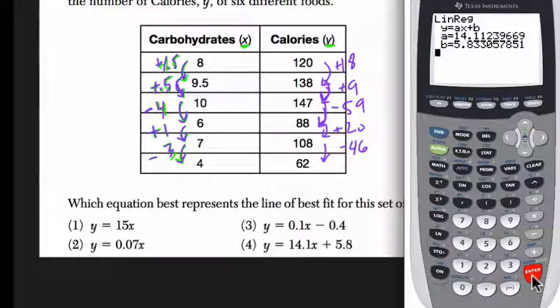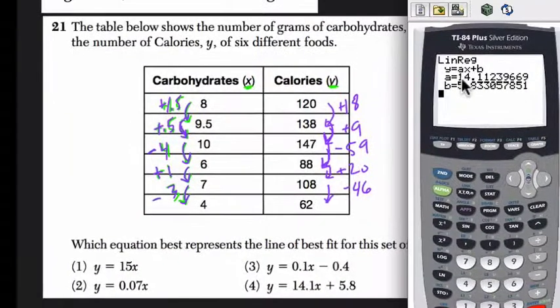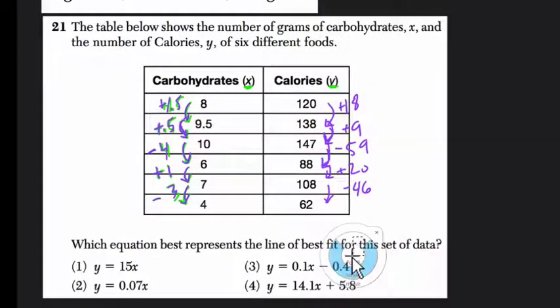And here, if we hit enter, we get everything we need. The slope is 14.1, about, and the y-intercept is about 5.83, which is choice 4 right here. So again, I feel like this is one of those rare cases where the calculator can really help you.